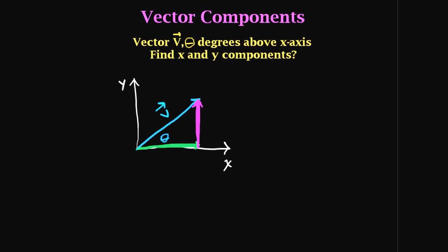So how do we find the components? We can clearly see them, but what are their values? A lot of people get tripped up here, and I believe it's due to a lack of knowledge in trigonometry. If you're struggling with trig, let me know and we'll clarify the basic topics. But most of you should know enough trigonometry to follow through this video. Almost everyone has heard the saying — SOH-CAH-TOA.